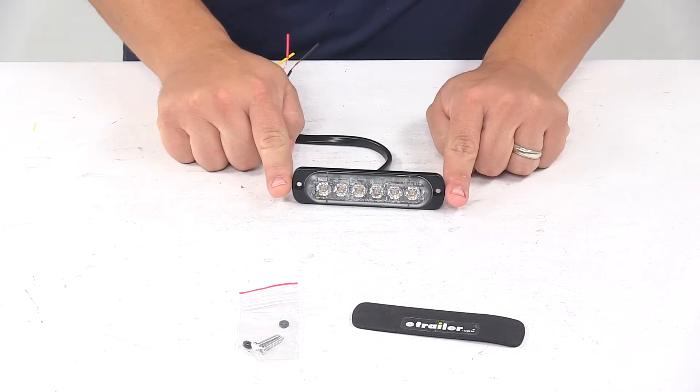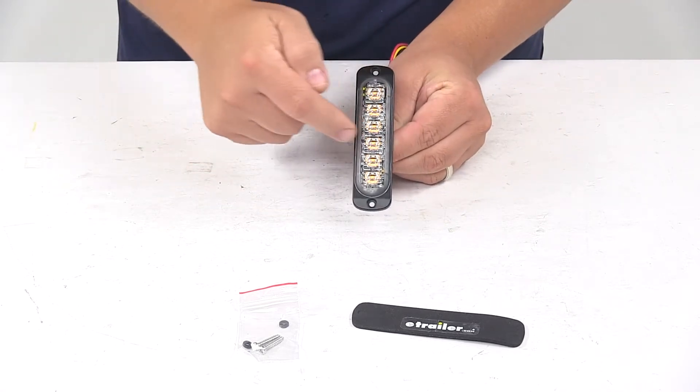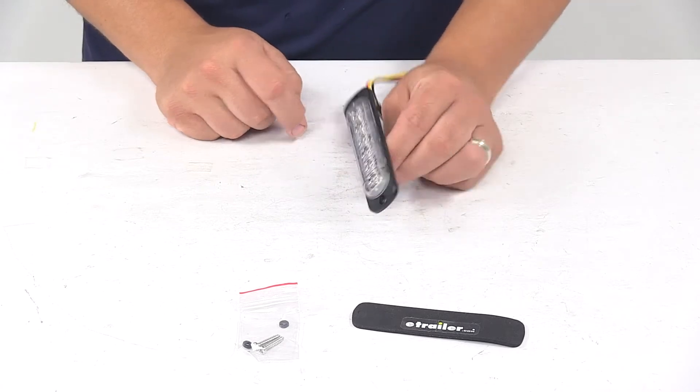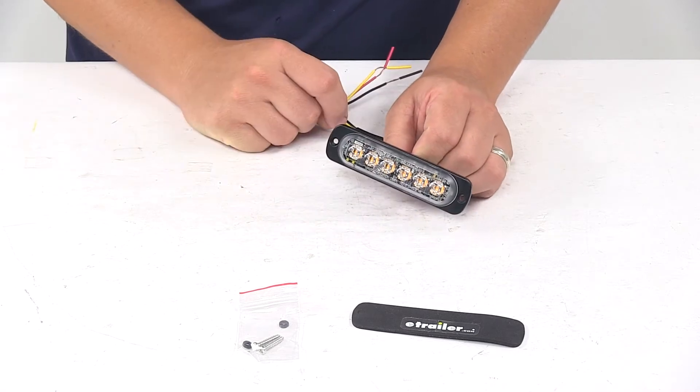When it comes to the overall dimensions, edge to edge going this direction is about four and a half inches. Edge to edge this direction is about one and one-eighth inches. And the overall thickness is about three-eighths of an inch thick. Mount holes are separated on center by four inches.